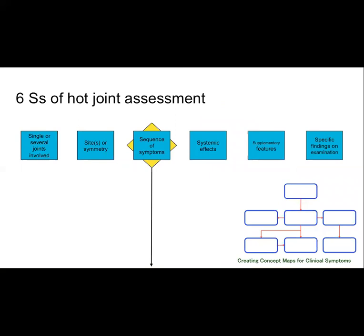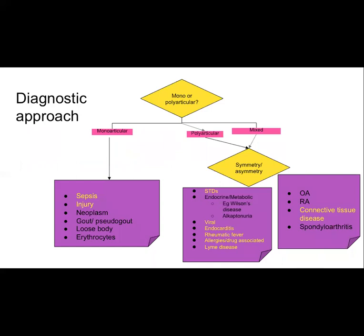The third S for joint assessment is sequence of symptoms. Generally speaking, infectious, post-infectious injury are presented as acute joint pain or swelling. In this slide the yellow fonts are acute. As you can see, almost all of the causes of polyarthropathies are acutely presented.